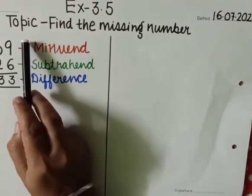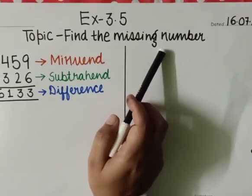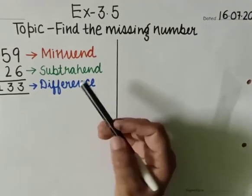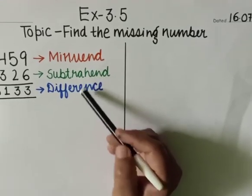Today my topic is find the missing number. So before starting, I want to recapitulate minuend, subtrahend, and difference.